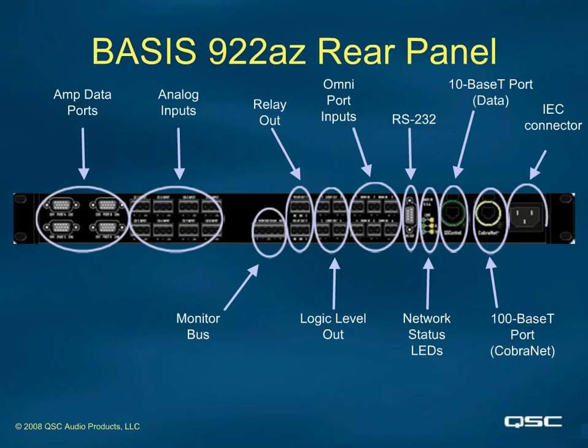Finally, there is a power cord connector. This device has an internal universal supply which will automatically adjust for different AC voltages, from 100 volts AC through 230 volts AC at 50 Hz or 60 Hz. This means the same unit will work in the USA, Europe, Asia, the Middle East — anywhere in the world — as long as you use an IEC power cord with the correct connector to meet the wall receptacle.